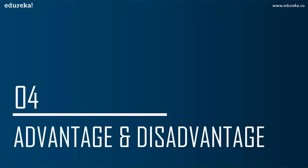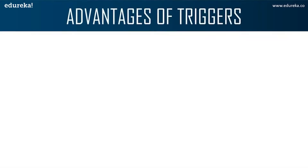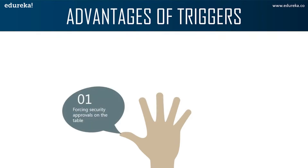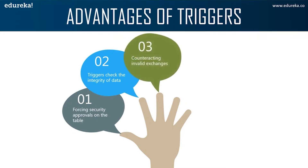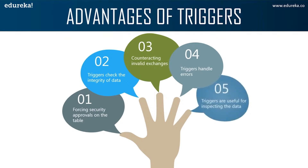Let's look at the advantages of a trigger. First, triggers enforce security approvals on tables in the database. Second, triggers provide another way to check the integrity of data. Third, triggers counter react to invalid transactions. Fourth, triggers handle errors from the database layer. And finally, triggers are useful for inspecting data changes in a table.